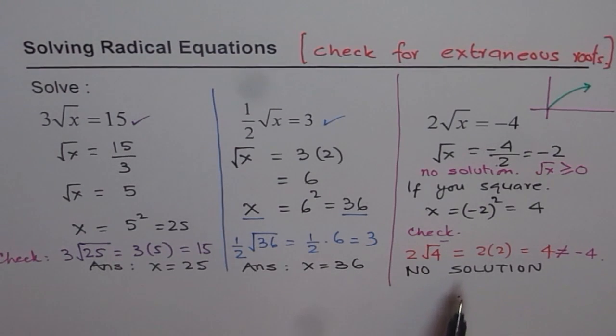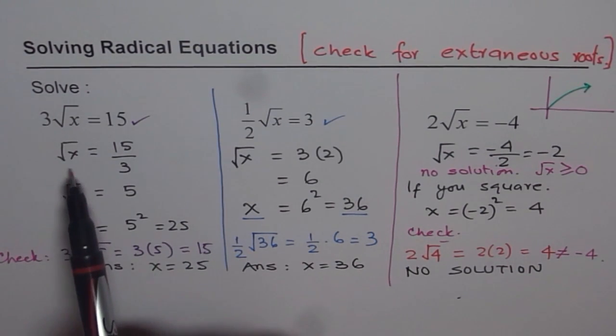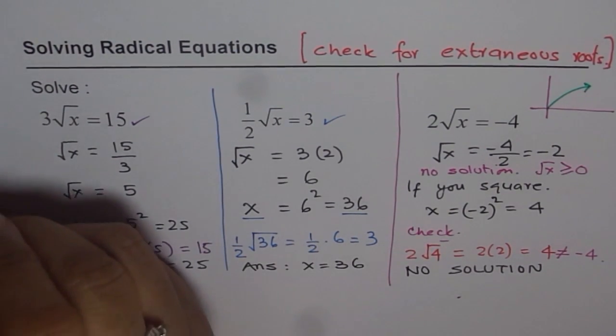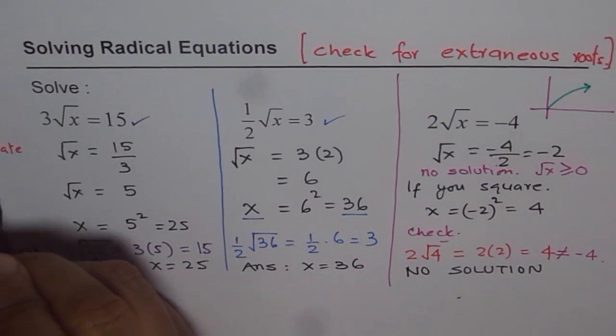So let us review what we did. Whenever you are solving radical equations, first step is isolate the radical, the square root function. Then you square it. So first is to isolate. And second, square both sides.